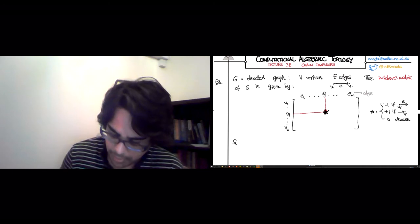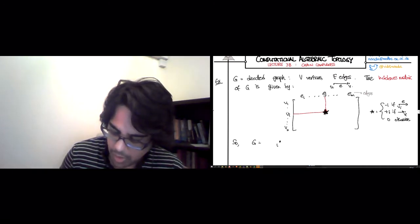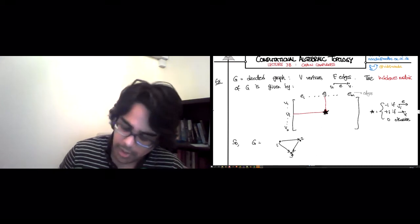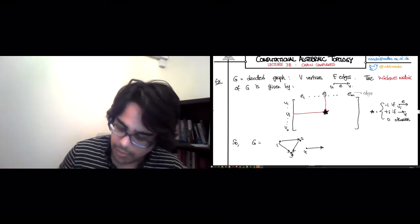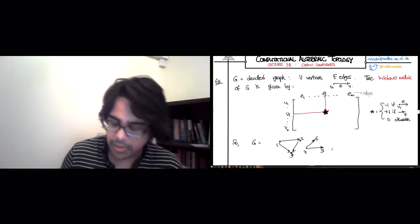So if G is 1 to 2, 2 to 3, 1 to 3, and 4 to 5 to 6. So there are these two pieces.